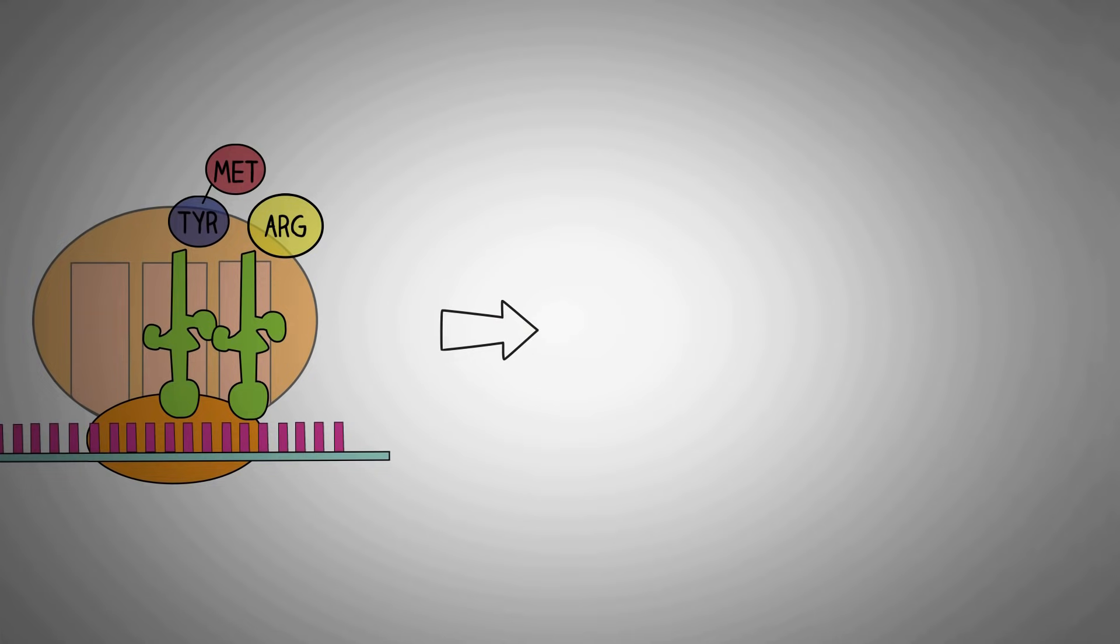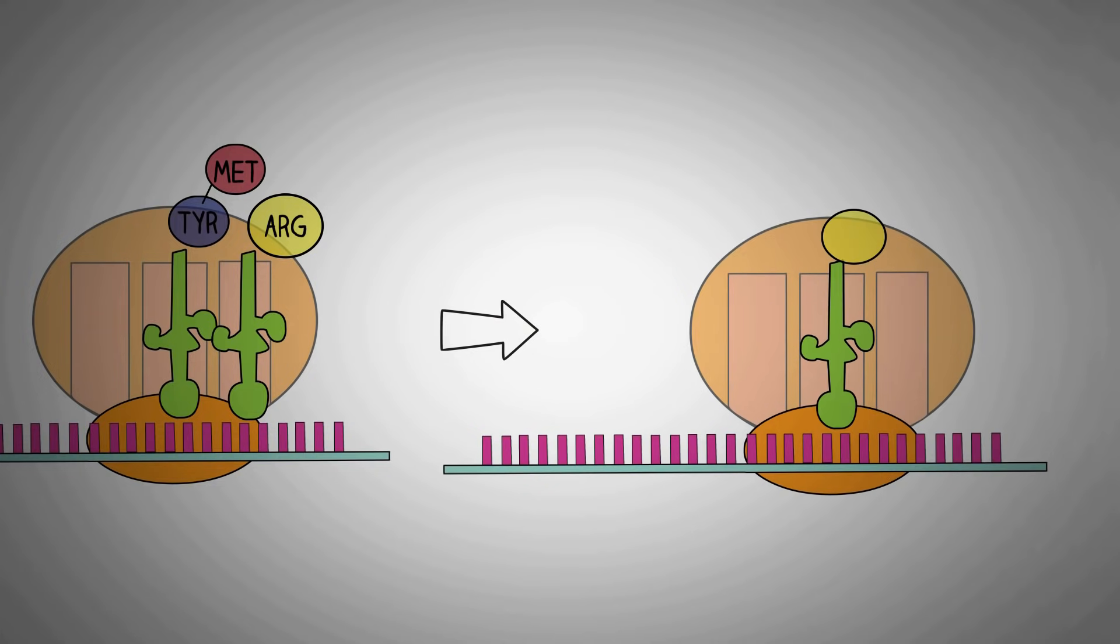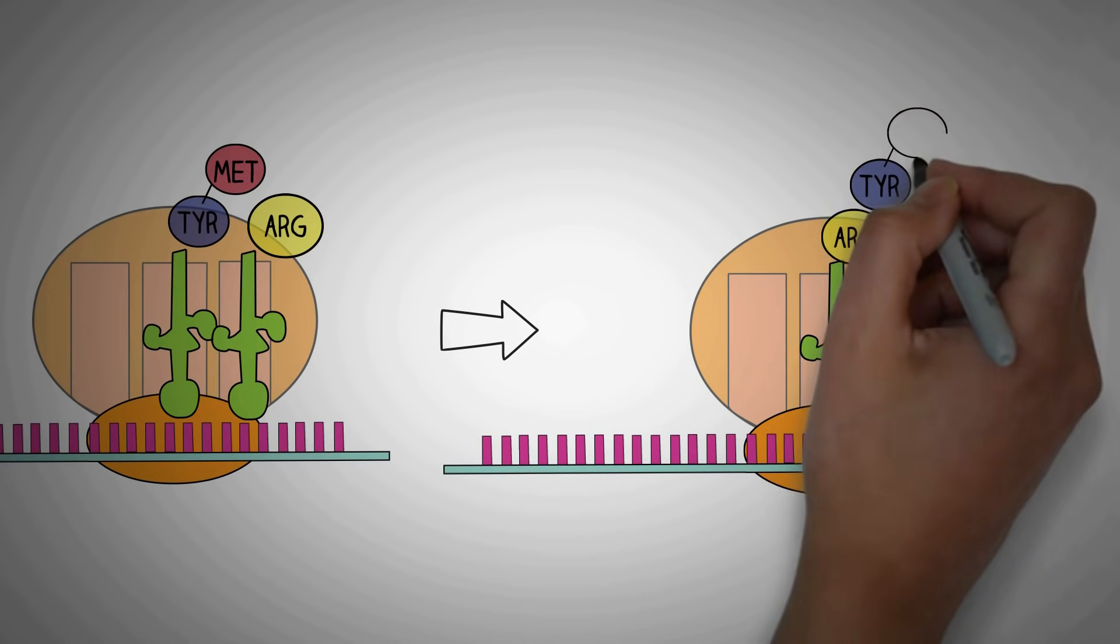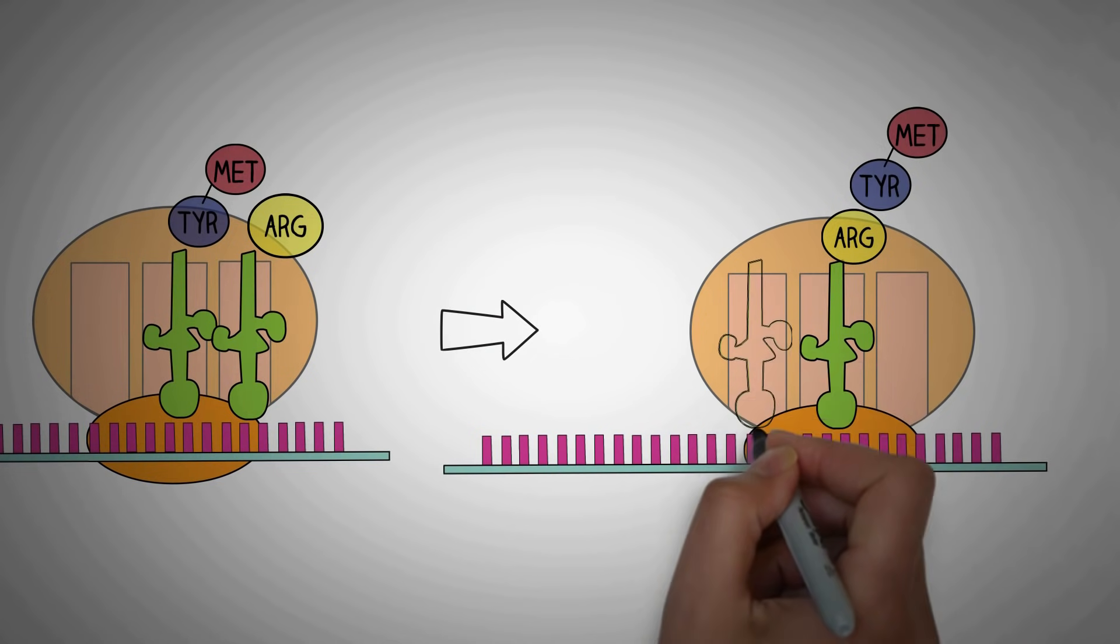Again, this tRNA becomes empty and the mRNA moves again repeating the whole process until we get a polypeptide chain of desired length.